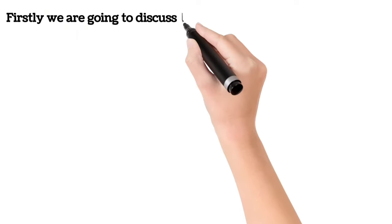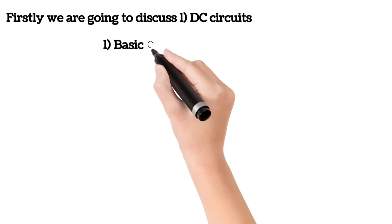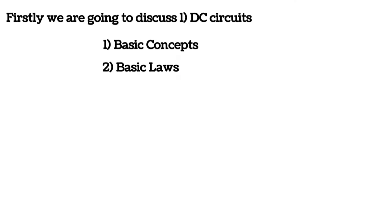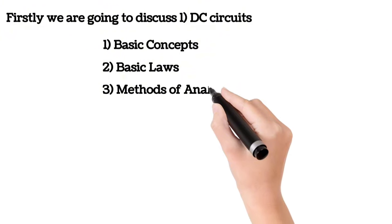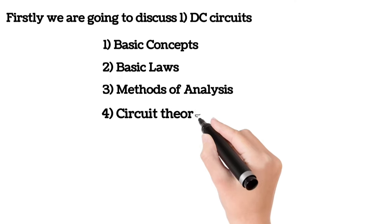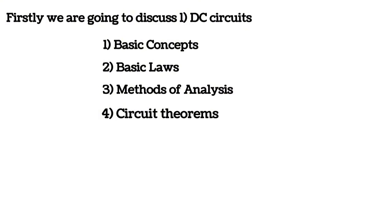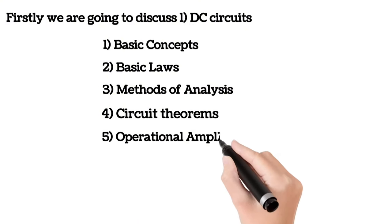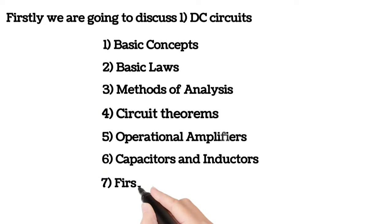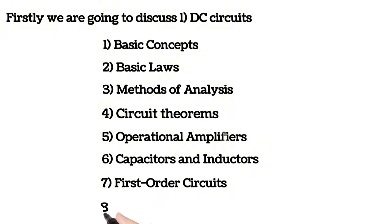We will first discuss DC circuits. The outline of DC circuits includes: basic concepts, basic laws such as Kirchhoff's Law and Ohm's Law, methods of analysis, circuit theorems, operational amplifiers, capacitors and inductors, first order circuits, and second order circuits.